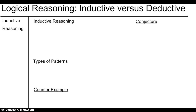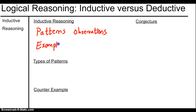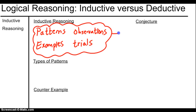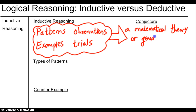Let's start with inductive reasoning. Inductive reasoning uses patterns, observations, examples, and trials to form a kind of conclusion. In math, we call that conclusion a conjecture. A conjecture is a mathematical theory or generalization. So we use inductive reasoning to make conjectures.